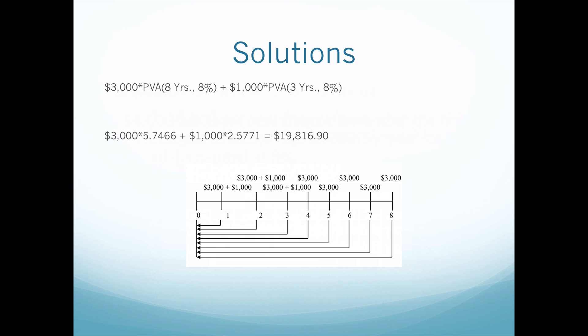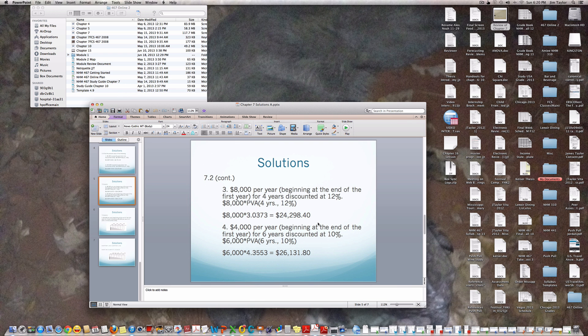There are two ways to look at this. When I see the $4,000, I actually see $3,000 plus $1,000. If we break it up that way, we have two annuities that start at time period zero. The first is a $1,000 annuity for three years, and the second is the $3,000 annuity for eight years. So the formula is: $3,000 times PVA(8 years, 8%) plus $1,000 times PVA(3 years, 8%). The multipliers are 5.7466 and 2.5771, giving us $3,000 × 5.7466 + $1,000 × 2.5771 = $19,816.90.